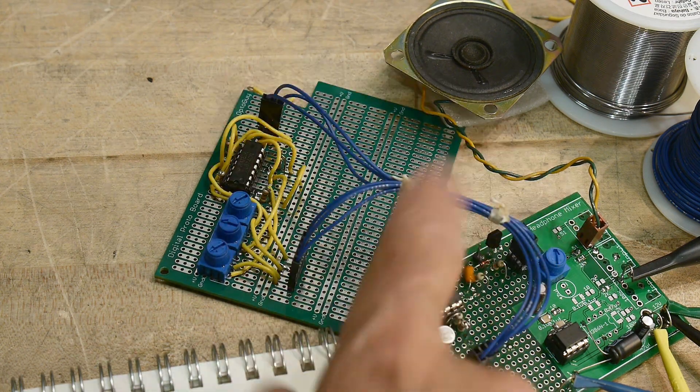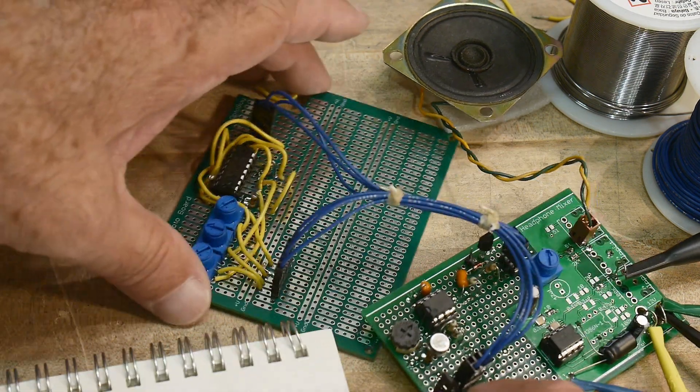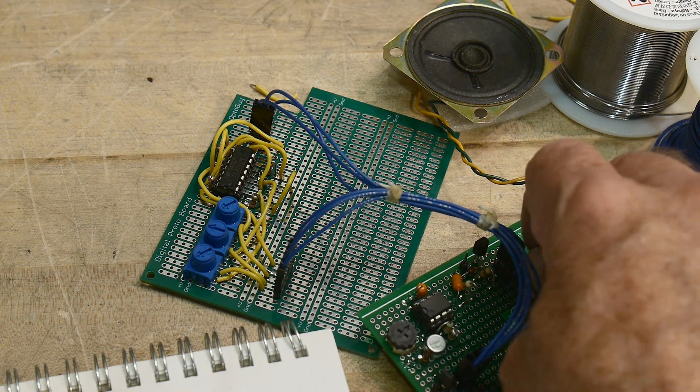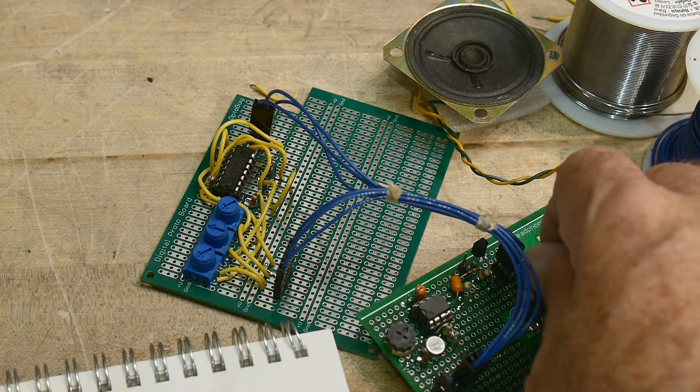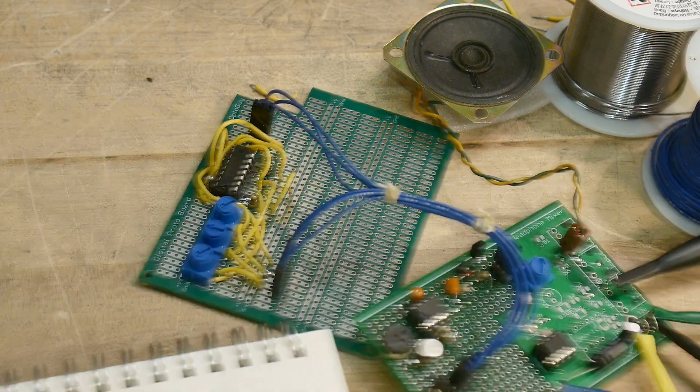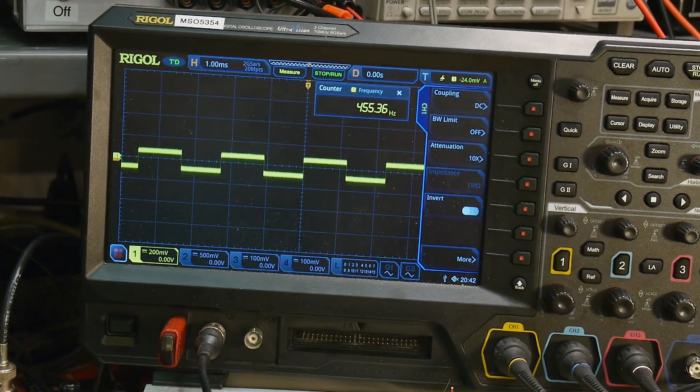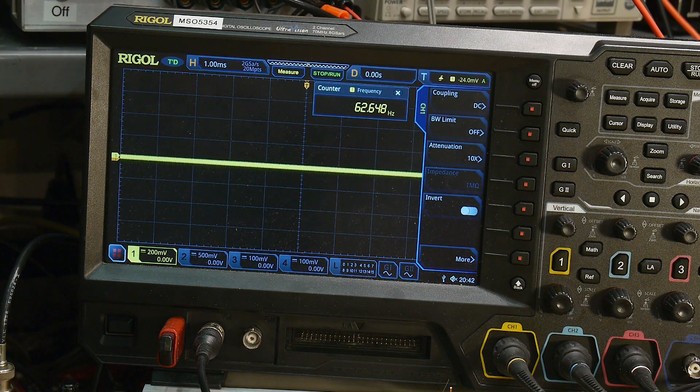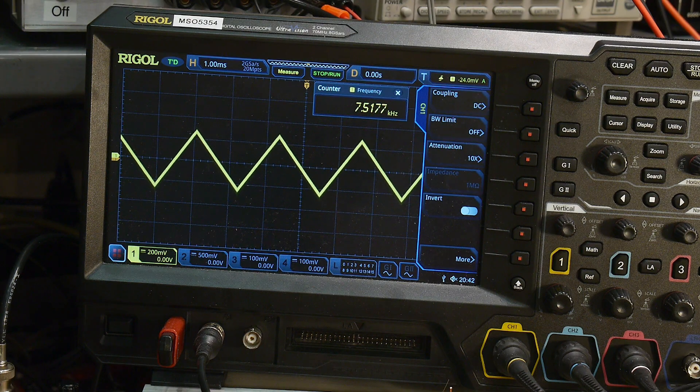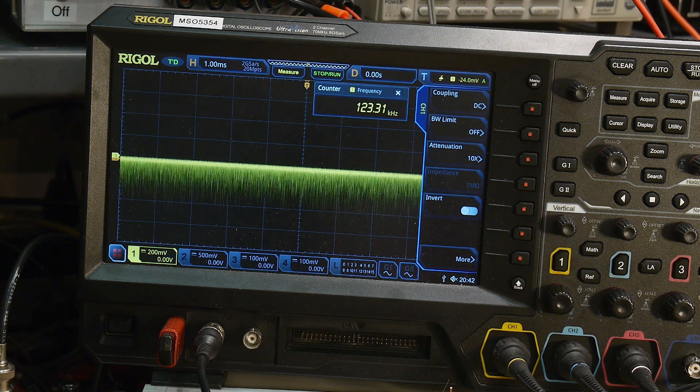And I've made a little cable here to go between the two boards, and so we can turn it on, and we can hear it there. Turn off here for a second, and we're sending in the square wave. I can turn down the square wave, and I can turn up the triangle wave, turn down the triangle wave, and I can turn up the noise.